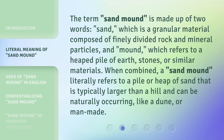The term Sand Mound is made up of two words: Sand, which is a granular material composed of finely divided rock and mineral particles, and Mound, which refers to a heaped pile of earth, stones, or similar materials. When combined, a Sand Mound literally refers to a pile or heap of sand that is typically larger than a hill and can be naturally occurring, like a dune, or man-made.